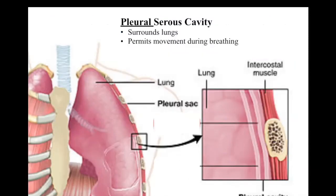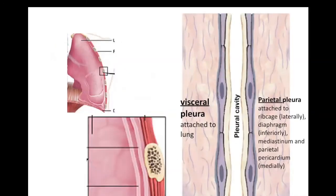Your lungs are sitting in the pleural serous cavity — pleural means two, there are two lungs. Here's the cavity aligning the lung. This part is attached to the rib cage and this part is attached to the lung tissue. Here's the visceral pleura attached to the lung tissue — it goes all the way around and becomes the parietal pleura, which is attached to the rib cage, your diaphragm, your heart, and your mediastinum. The parietal pleura is just attached to whatever is adjacent to it.